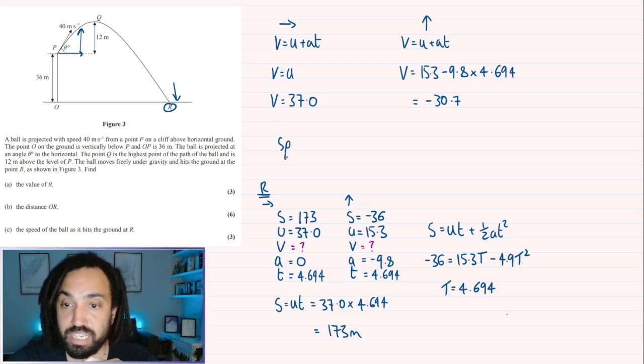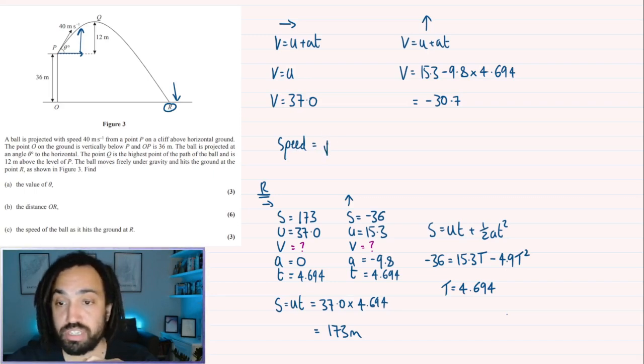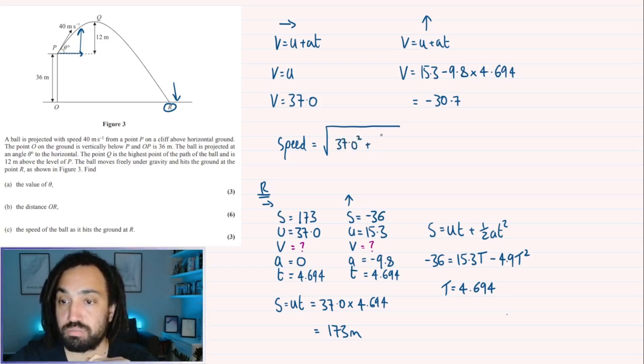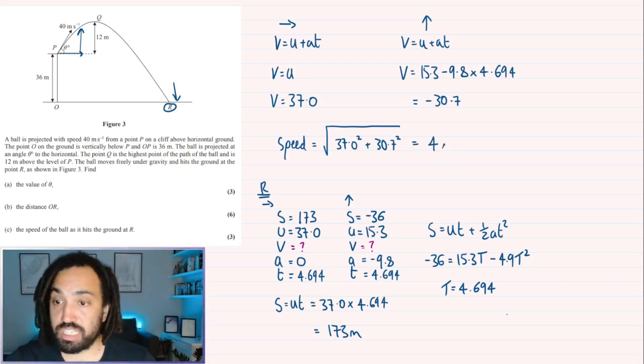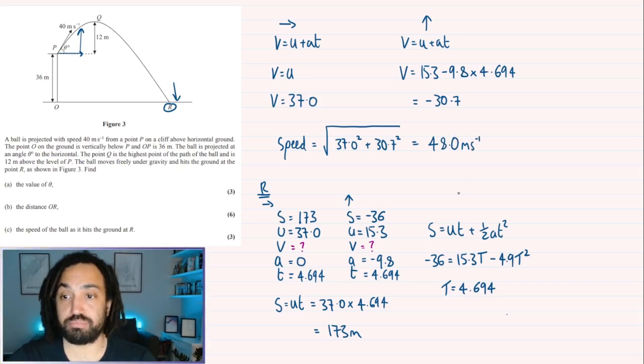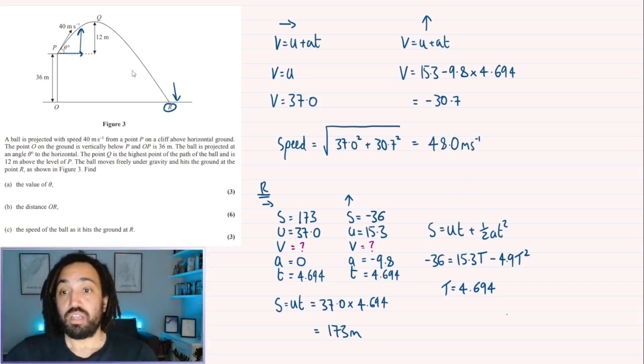OK. So how do we find speed? Well, speed is the magnitude of the velocity. So what we need to do is take our two components, the horizontal and square it and the vertical. It doesn't matter about the sign because you're squaring it anyway. And then square root. And this gives me a value of 48.0 meters per second. Beautiful. Like that question.